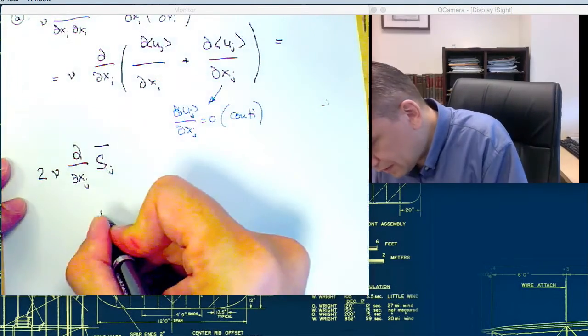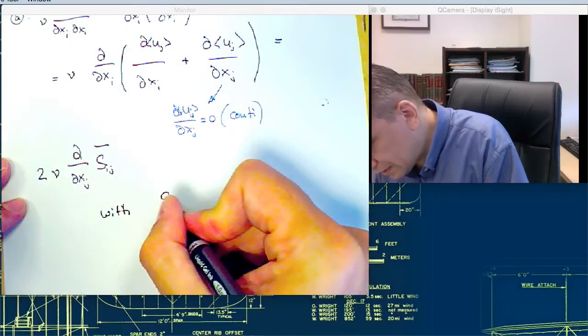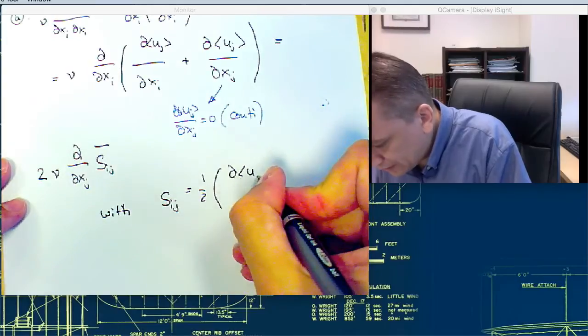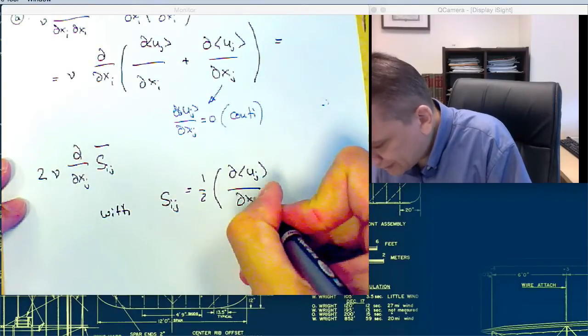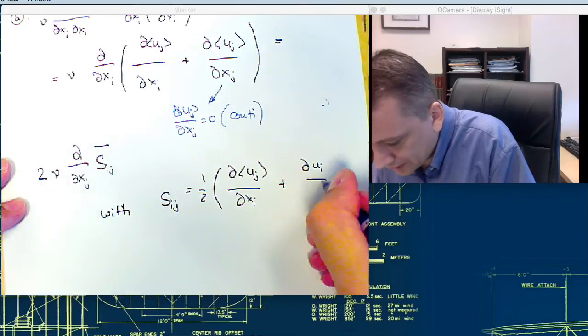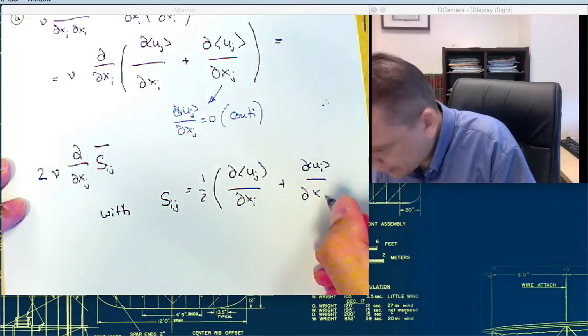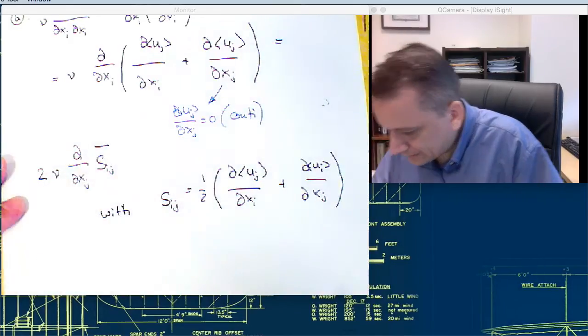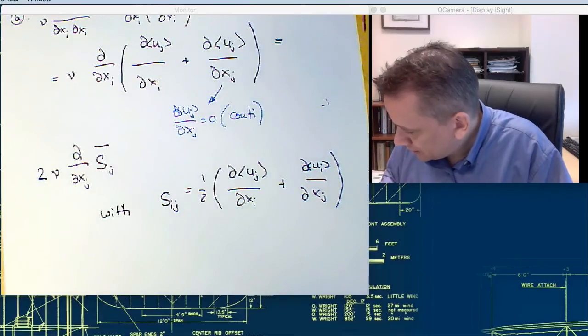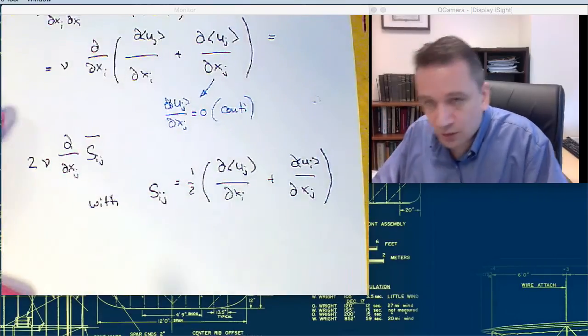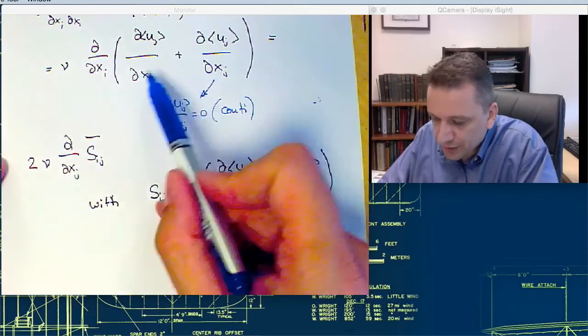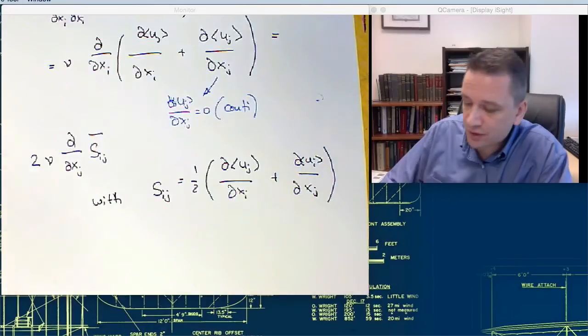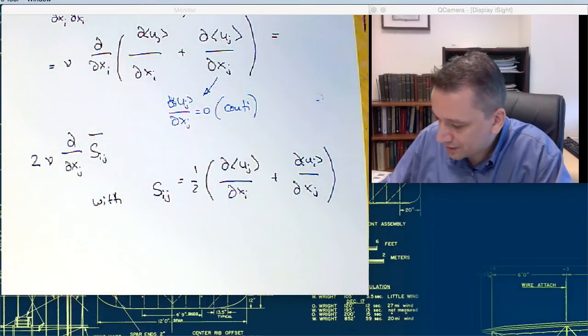So if I now define sij as one half d uj over dxi plus d ui over dxj. So with that, we can now continue to move on. So essentially I'm just rewriting this term here. I'm doing that because it's a bit easier to carry this term here, and we can derive some interesting things a little later on.